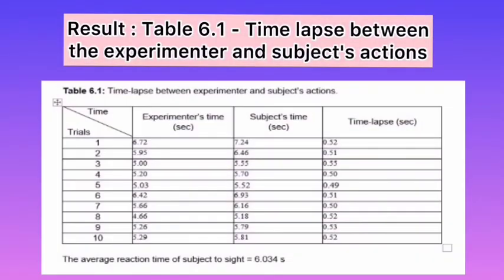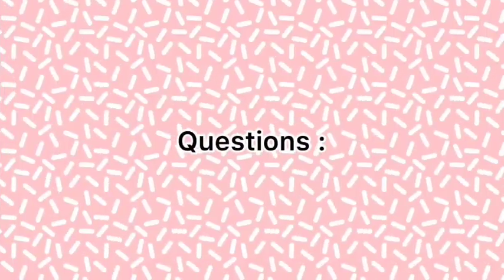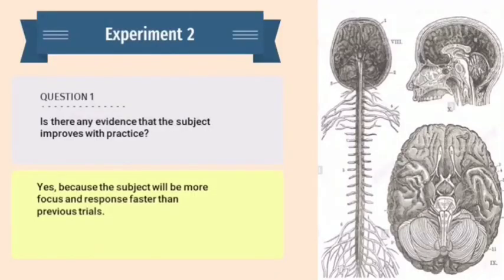This is the result for the second experiment, which shows the time lapse between the experimenter and the subject's action. The first question for Experiment 2 is: is there any evidence that the subject improved with practice? The answer is yes, because the subject will be more focused and respond faster than in previous trials.